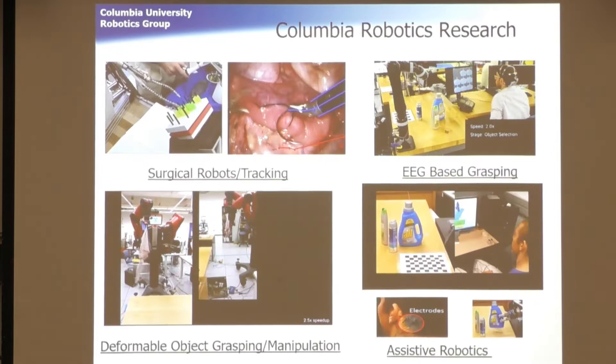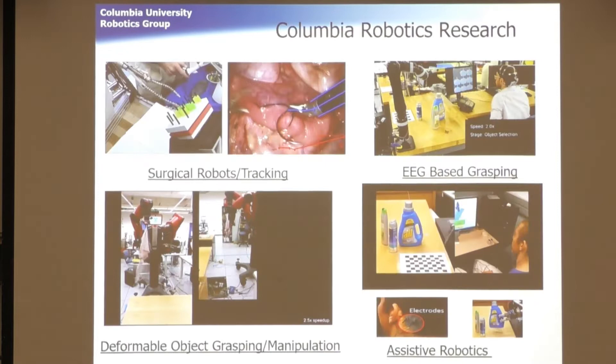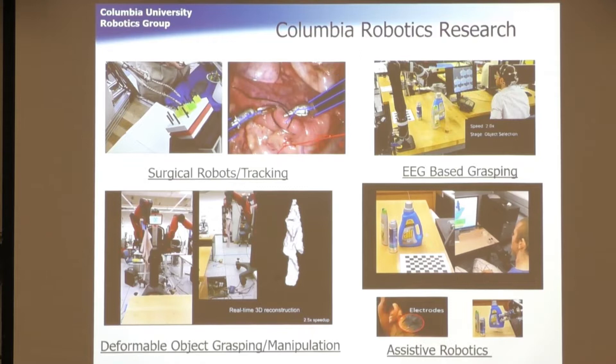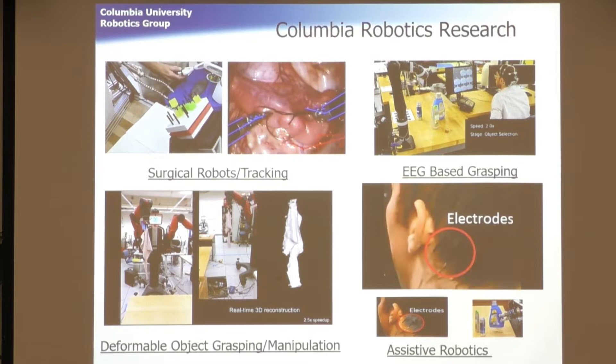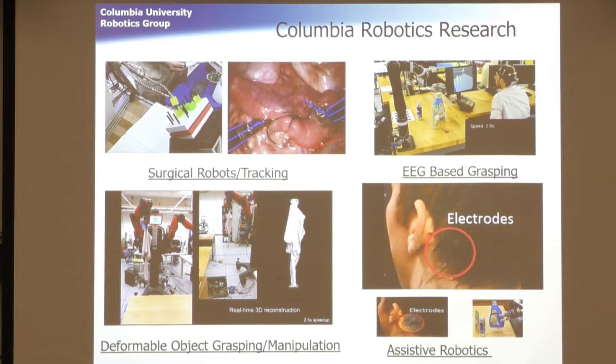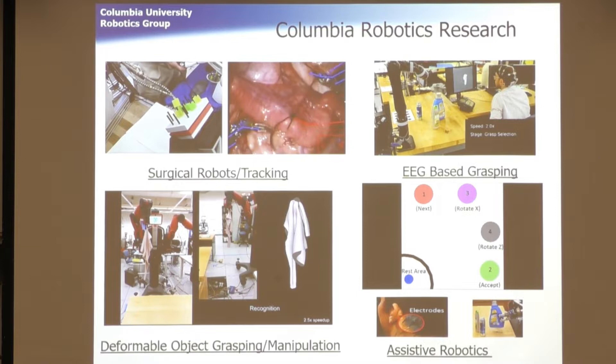I'm going to talk today about grasping, but I just want to give you a little overview of some of the other stuff we're working on. We do a lot of work in surgical robots and visual tracking of arms. We've done a lot of work recently in deformable object grasping and manipulation for soft objects, focusing on garments and clothing. And we've done a lot of work in assistive robotics, particularly looking at both EEG and EMG to control robots, and from an HRI perspective to do BCI. If you're interested, go to my website or talk to me afterwards at the reception.